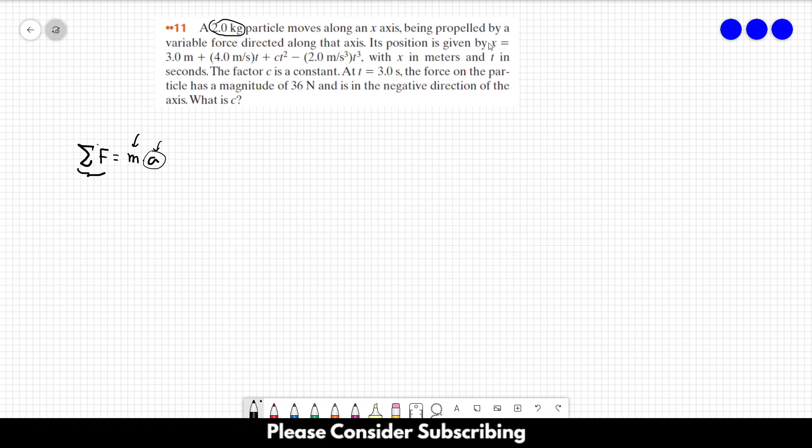However, we have the function of the position in respect to time. And we know that the acceleration is the second derivative of the position in respect of time. So if we derive this function two times, we find the acceleration, and then we can find the net force acting on the particle.